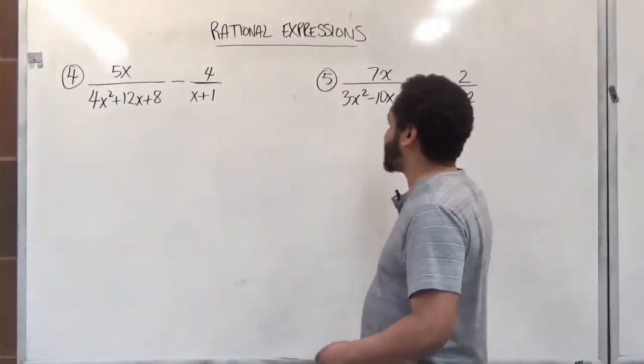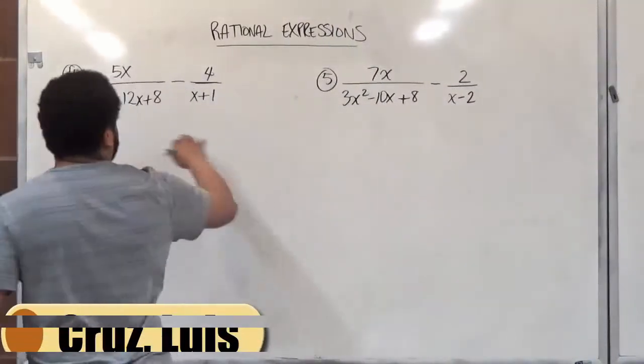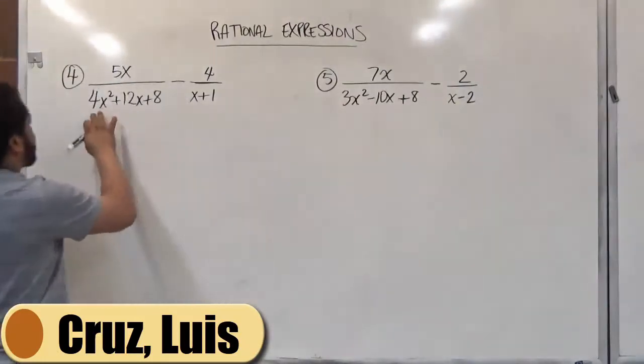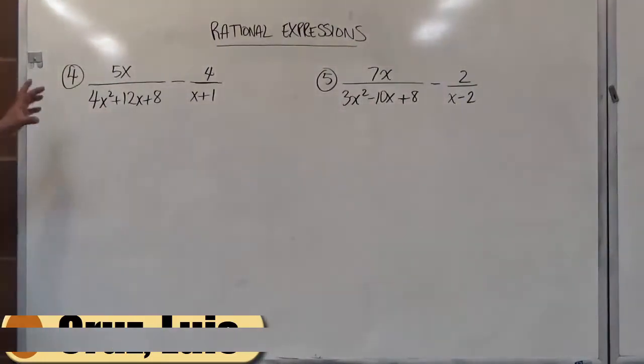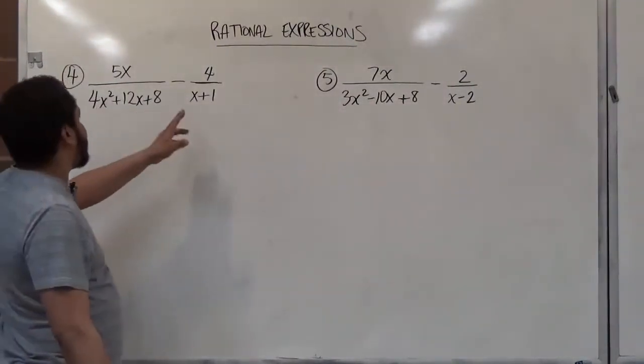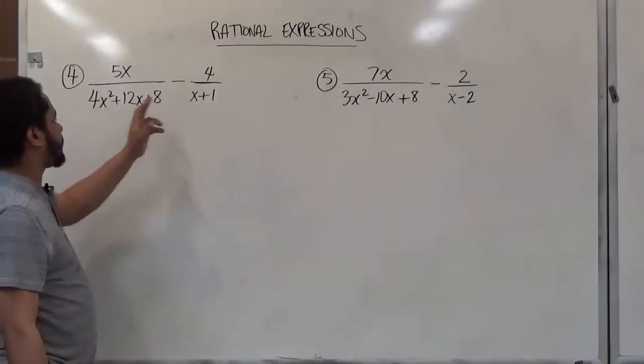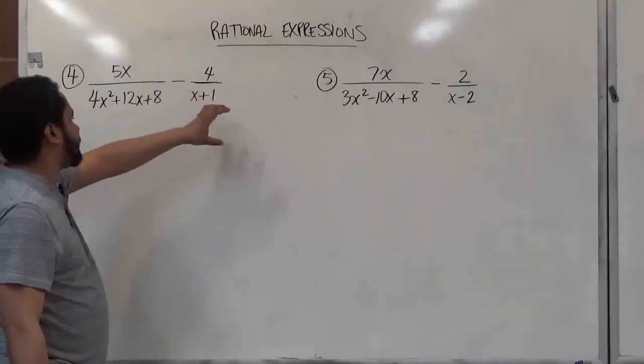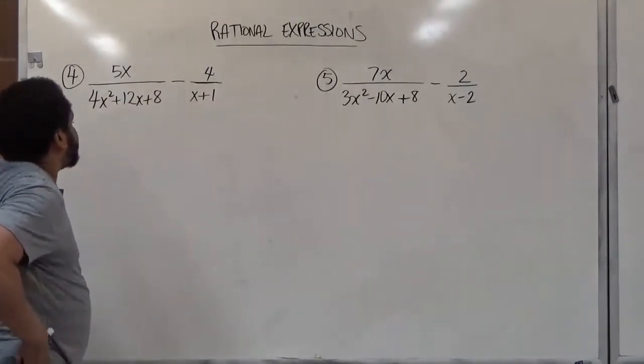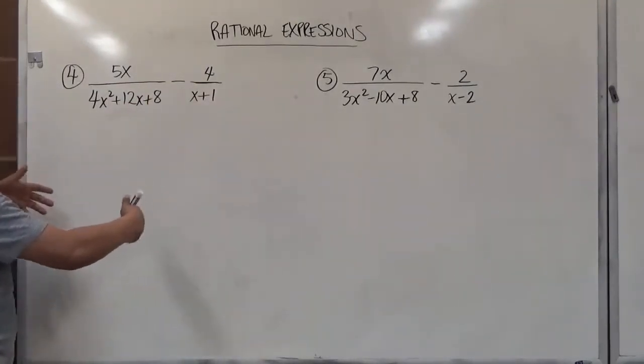All right, moving on to the other two problems we have. These are a bit harder because they have leading coefficients for both factor sets. Now, let's continue with the same format. We're going to factor the denominator, find the common factor in both of them, and complete the factor set so that we can complete the LCD and join the fractions together.